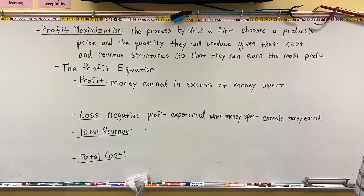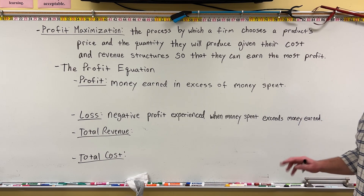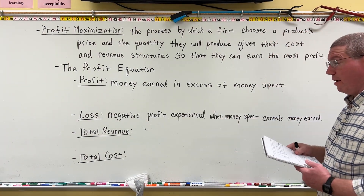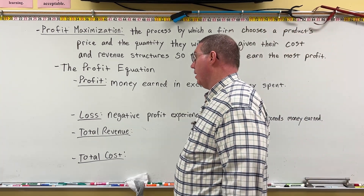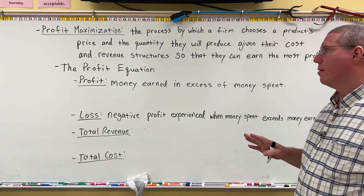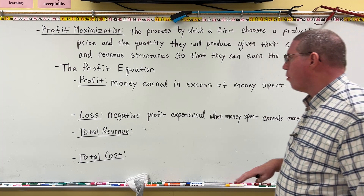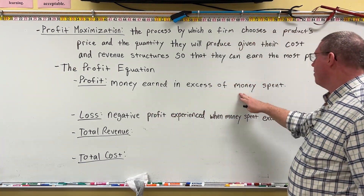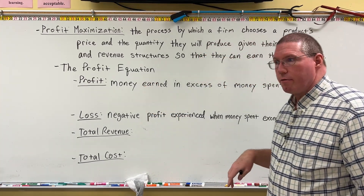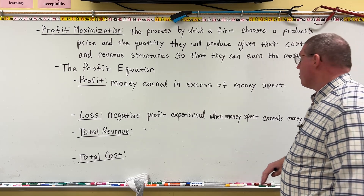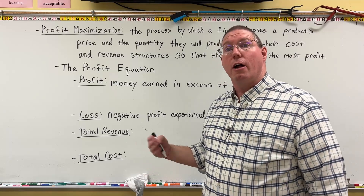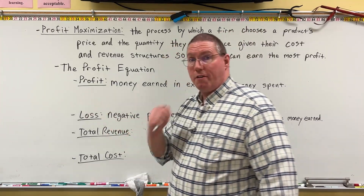Profit and loss are basically the same variable — they're not separate variables. Profit is money earned in excess of money spent. So if a business earns $500,000 and in the process spent $400,000, then they have $100,000 left over. That $100,000 left over is the profit of the firm.